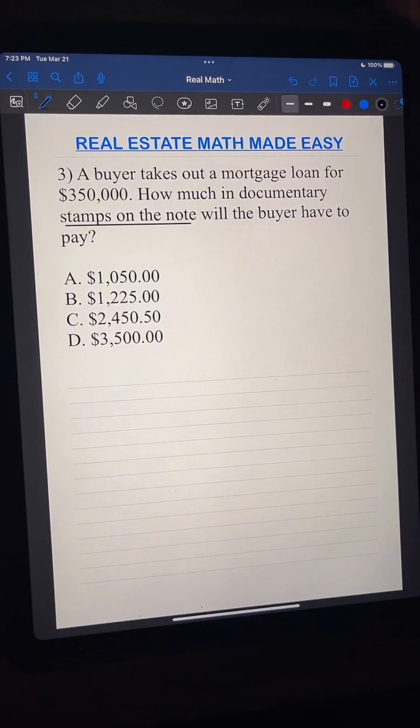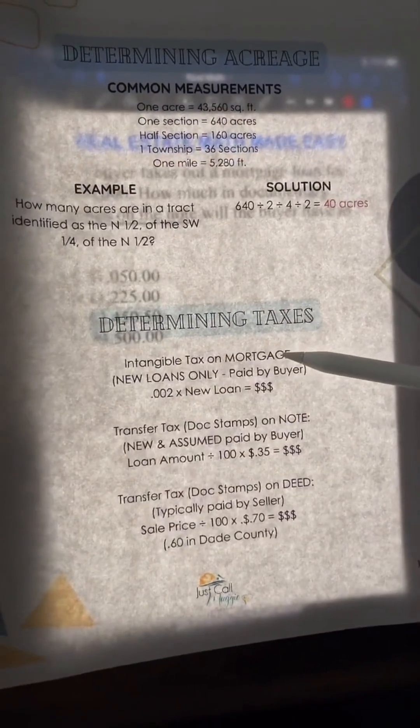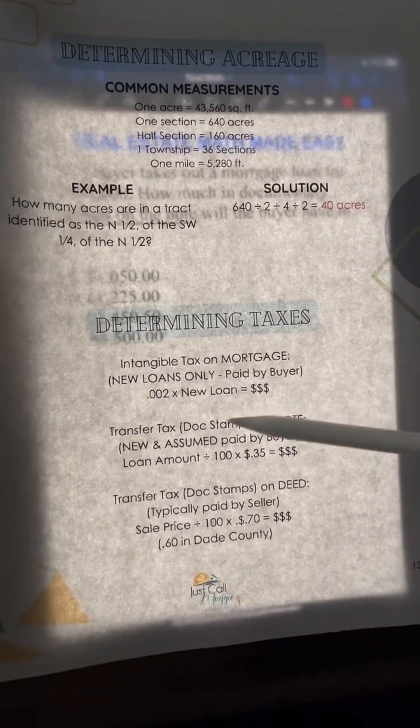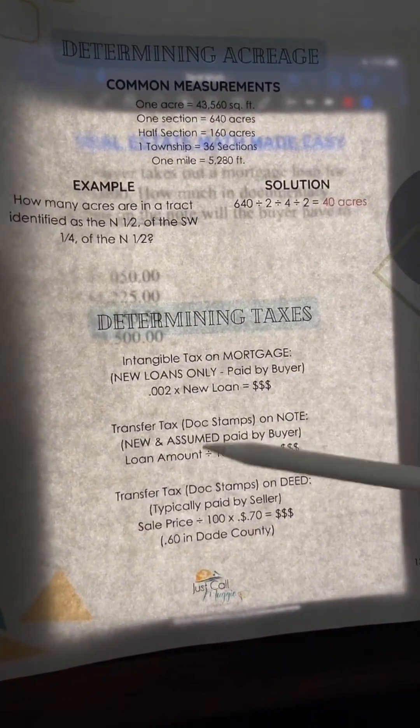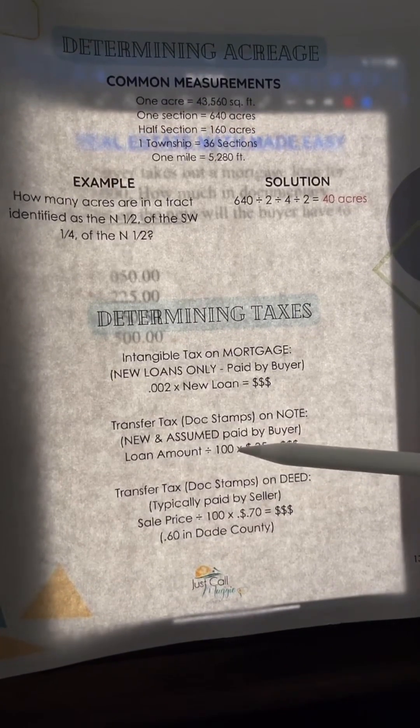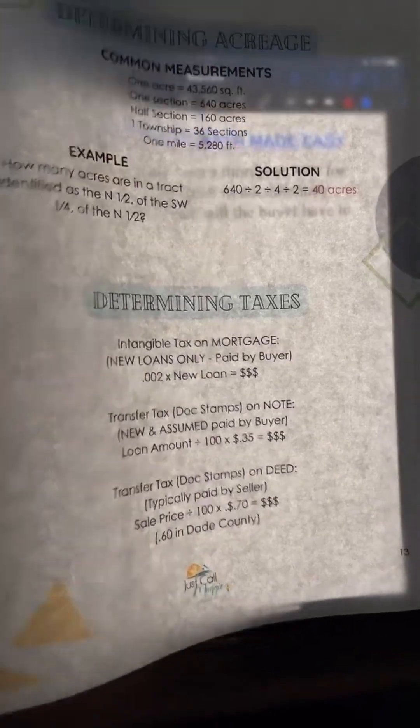Totally different, okay? So if we look at our cheat sheet, we see here that stamps on the note is right here, paid by buyer. So we're going to do loan amount divided by 100 times the 35, okay? Because it's 35 mils.